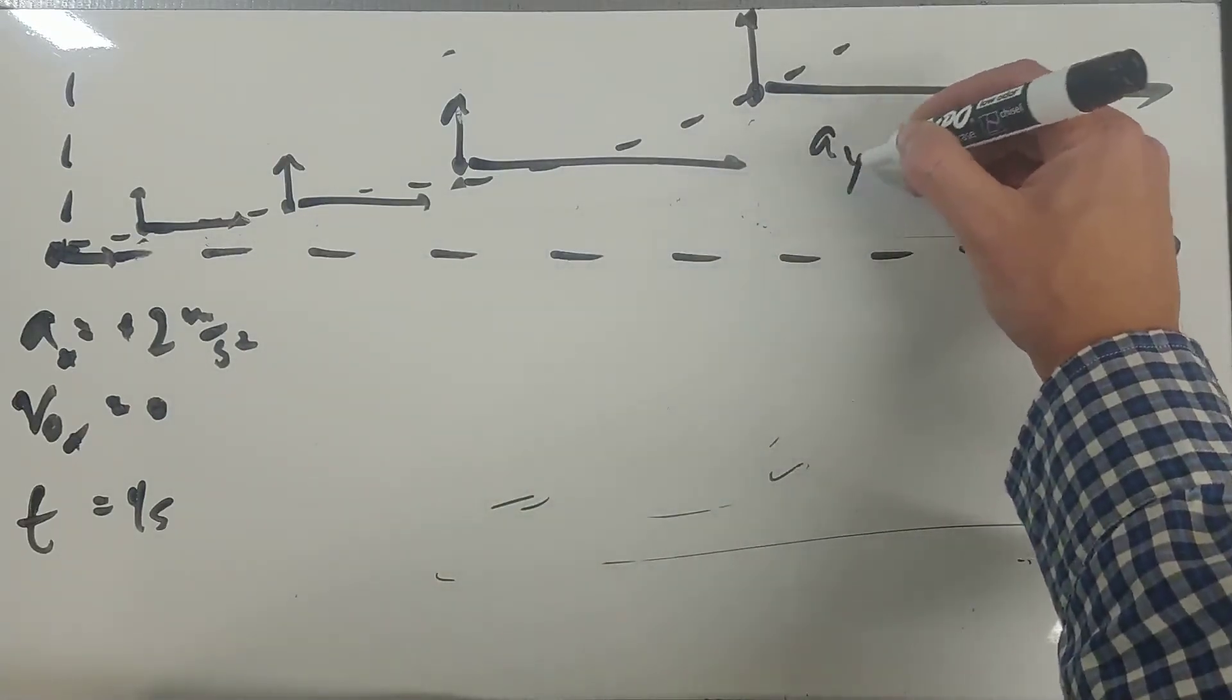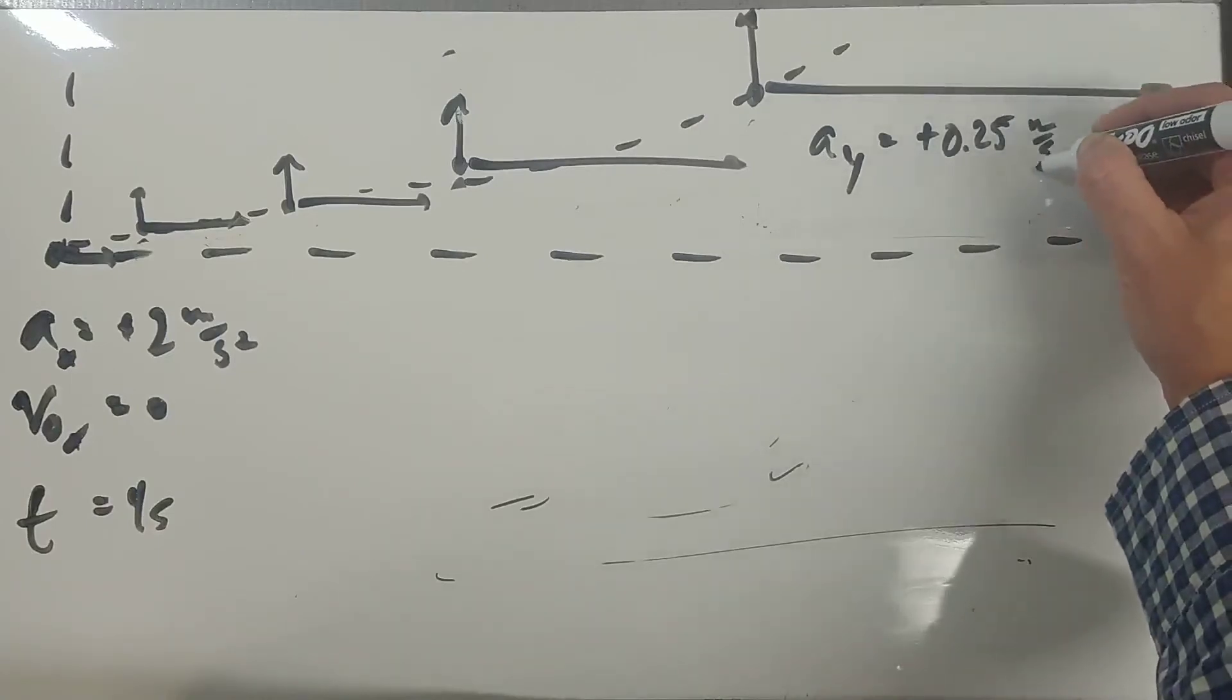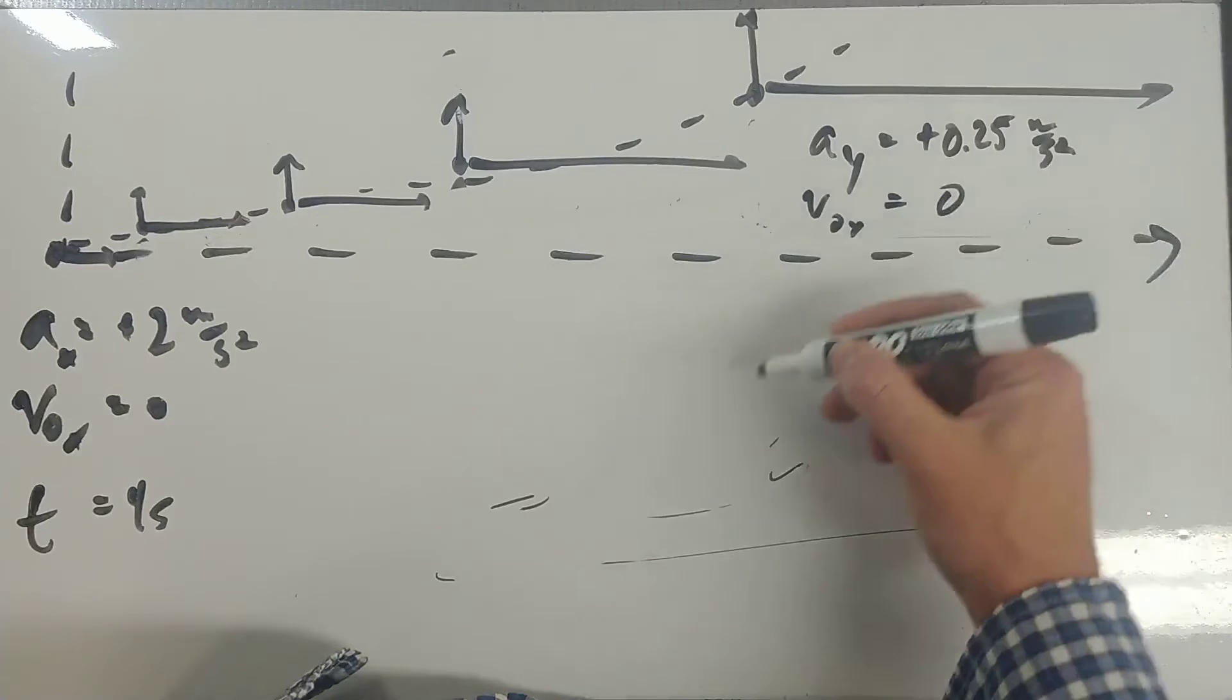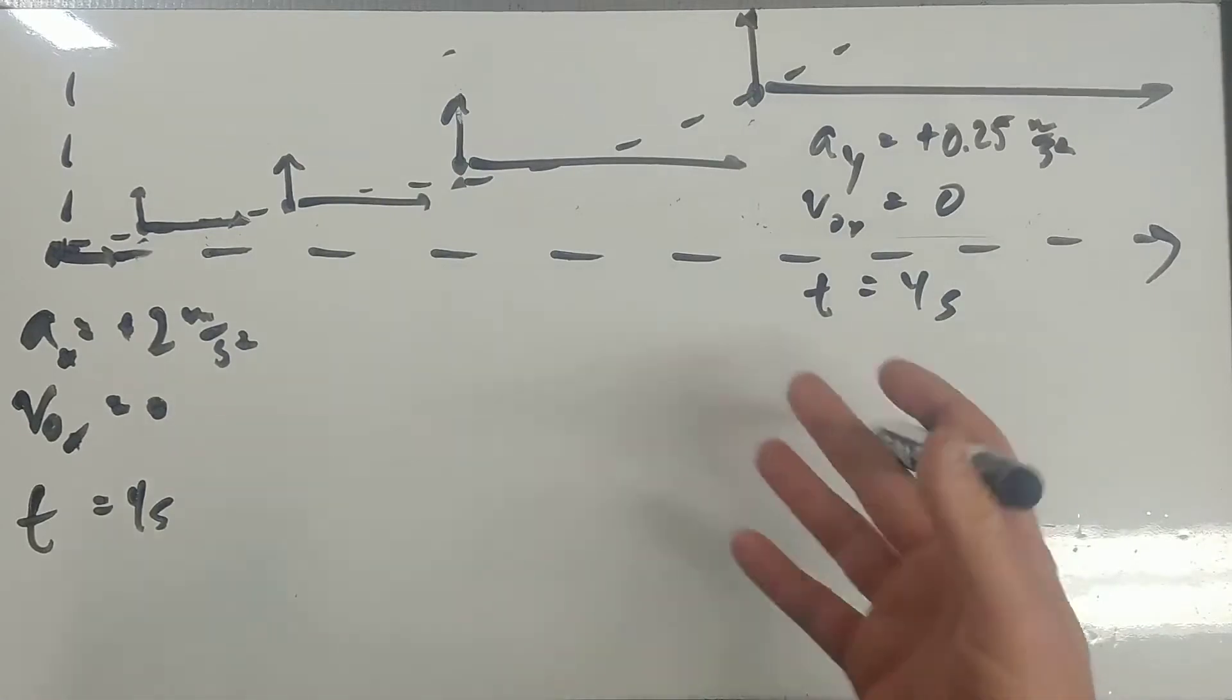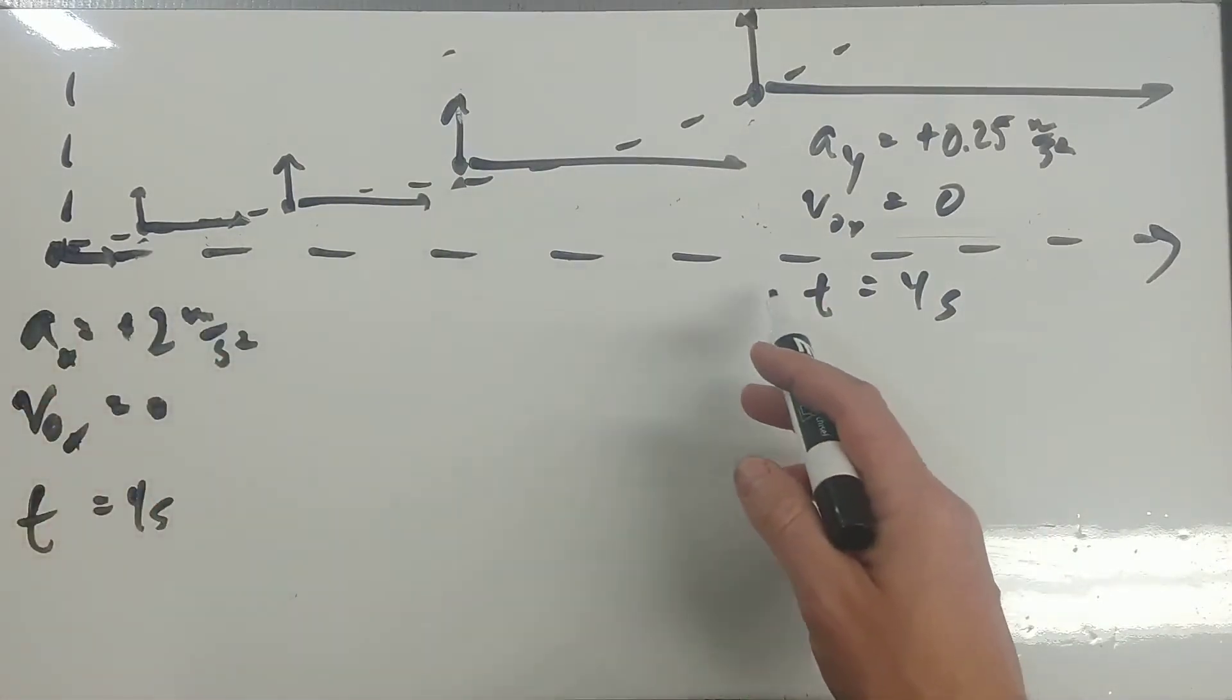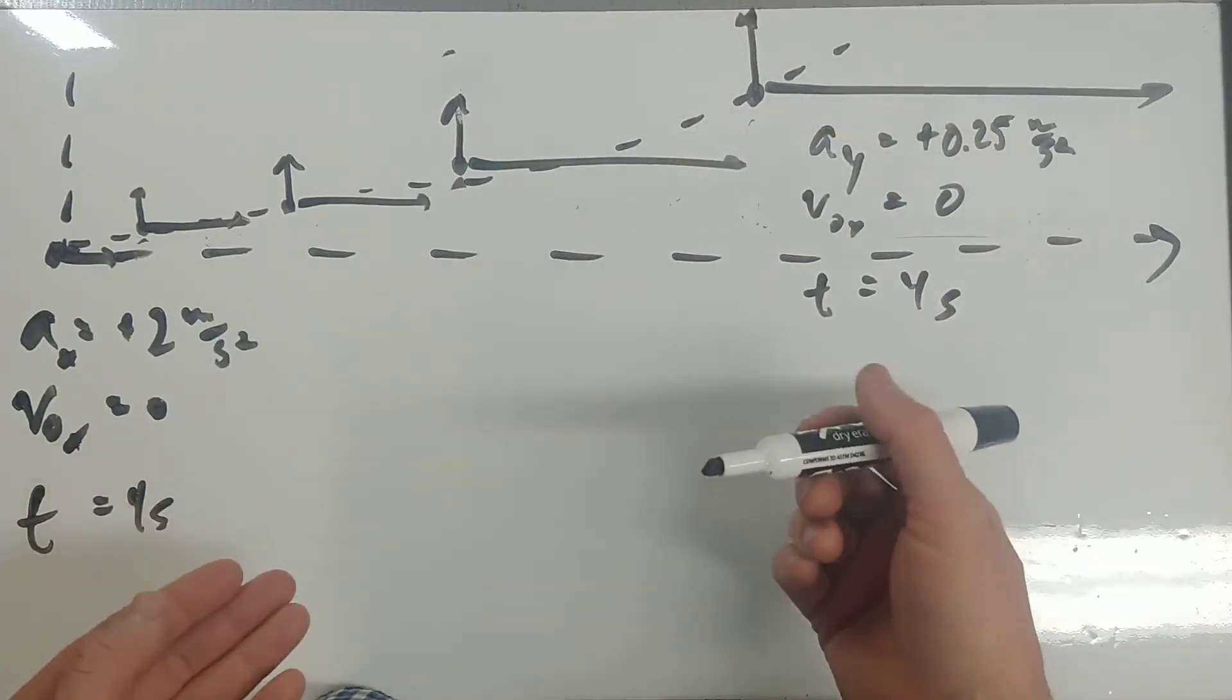Let's say a y equals positive 0.25 meters per second squared, v naught y equals zero, and still the time equals four seconds. So ultimately we want to figure out here, in those four seconds, how far does it displace itself to the right and how far does it displace itself that way.